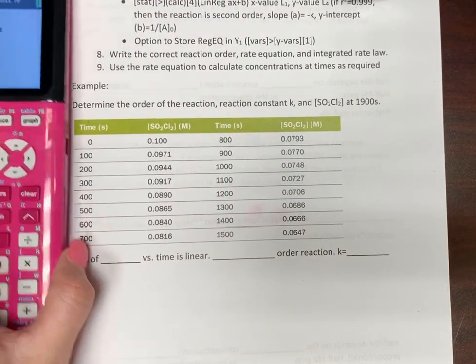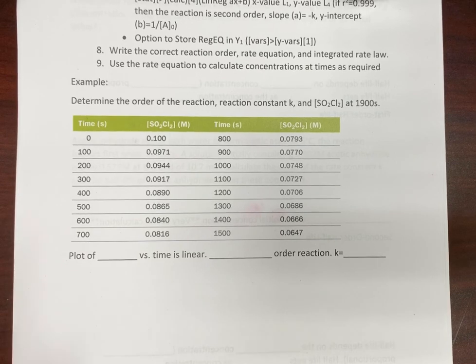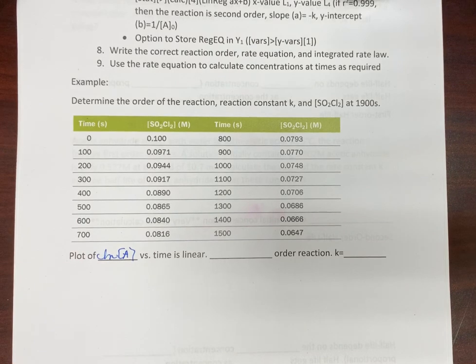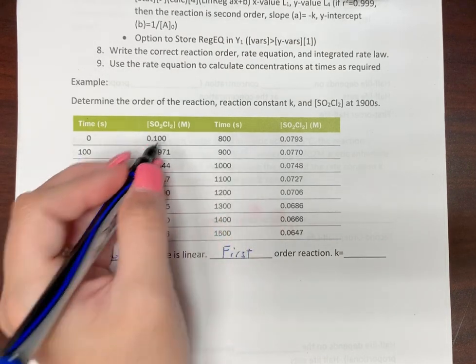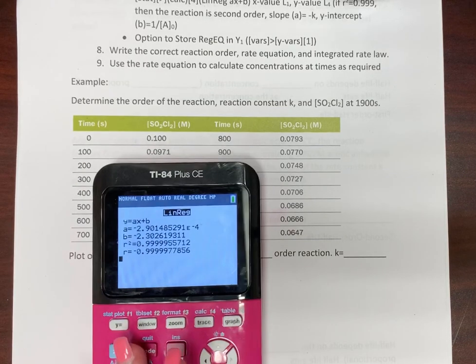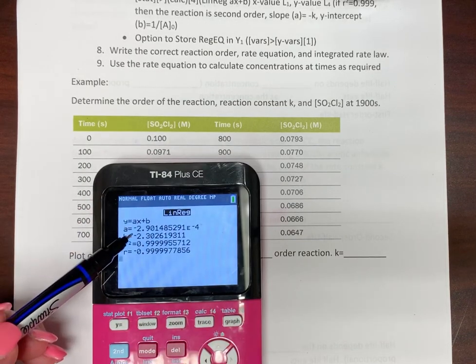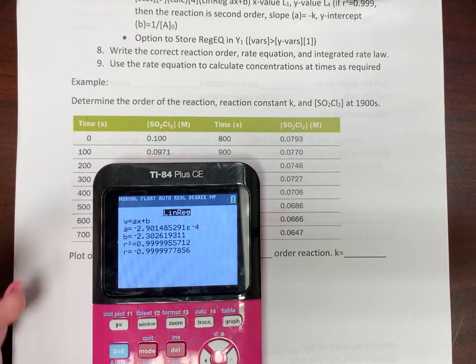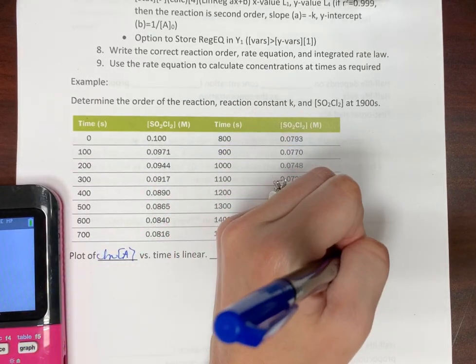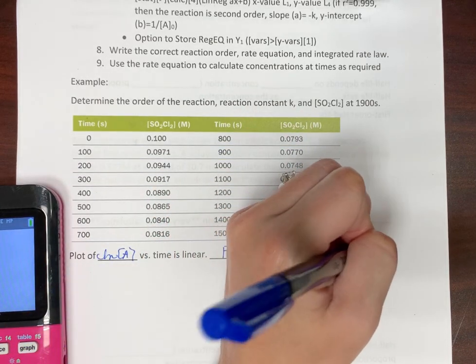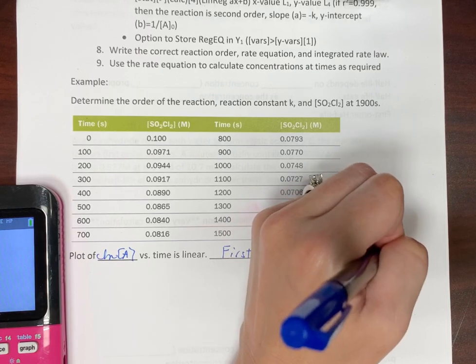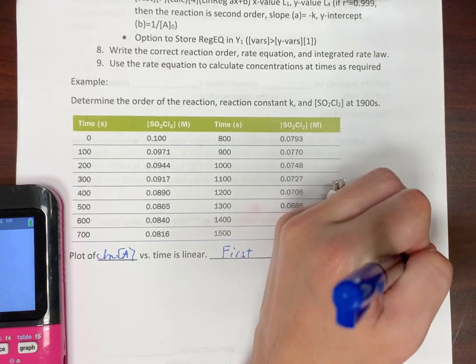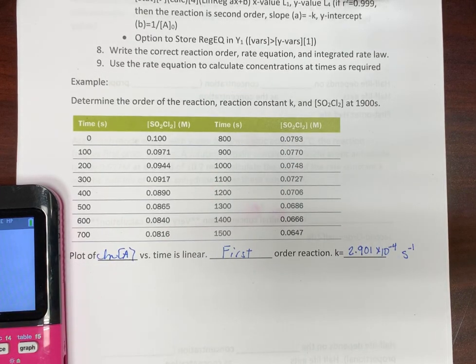Okay, so after I ran all of those, it was my plot of my natural log of A versus time is linear. That means this is a first order reaction with respect to this reactant. And our k value is the opposite. So it's negative of the slope. So just make this, ignore the negative and make it a positive. So that would be 2.901 times 10 to the negative fourth. Now you have to kind of remember here, first order reaction, inverse seconds.